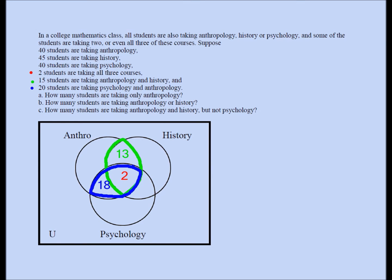Now let's fill in the anthropology region. 40 students are taking anthropology, so all four numbers in the anthropology circle should add up to 40. We have 18 plus 2 is 20, plus 13 is 33, plus 7 is 40 — so the only-anthropology region must be 7. If it said 40 took only anthropology, you would put 40 there, but it doesn't. Some of these 40 students may have taken history or psychology or both, so all four numbers in the circle add up to 40.